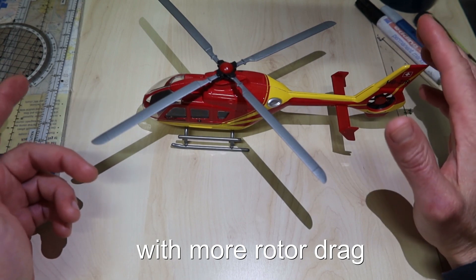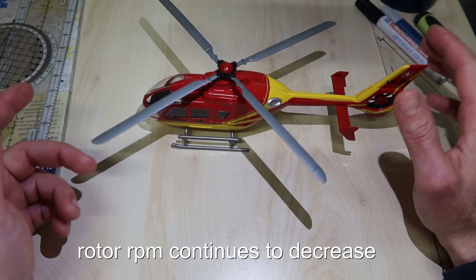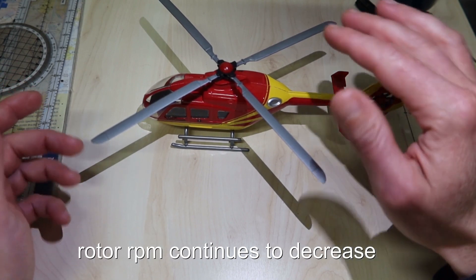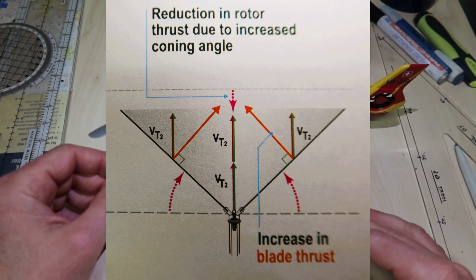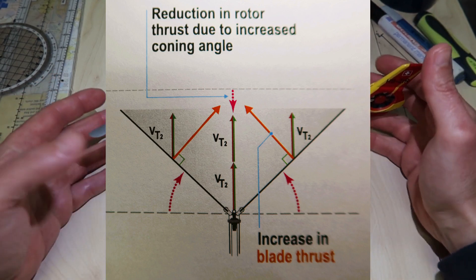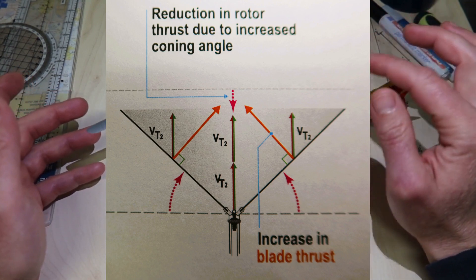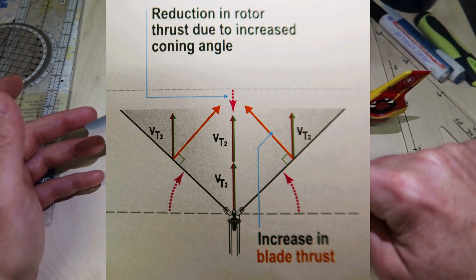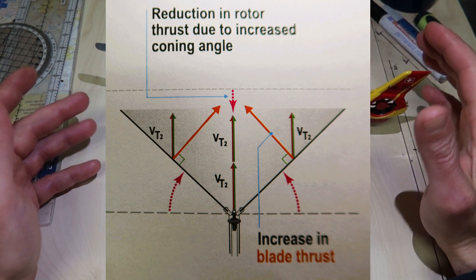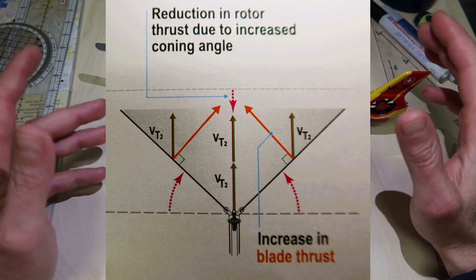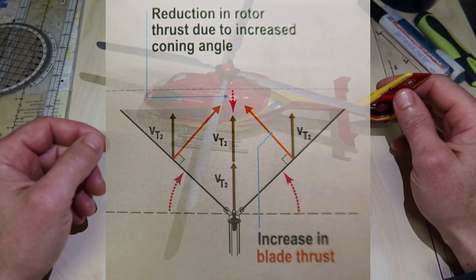With more rotor drag, rotor RPM continues to decrease while the coning angle increases, moving the direction of the individual blade's rotor thrust inwards. This yields less of a vertical component and an even greater loss of total rotor thrust.